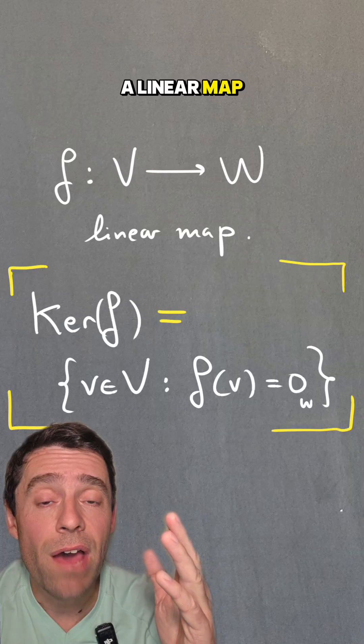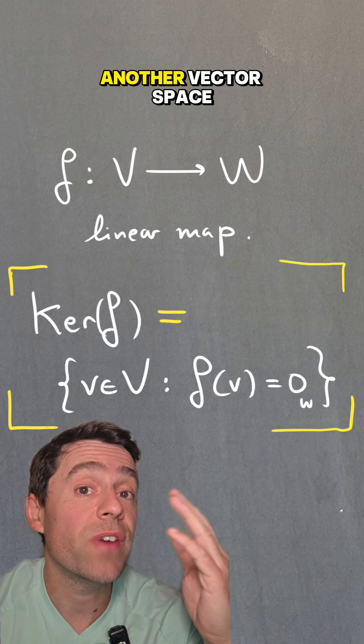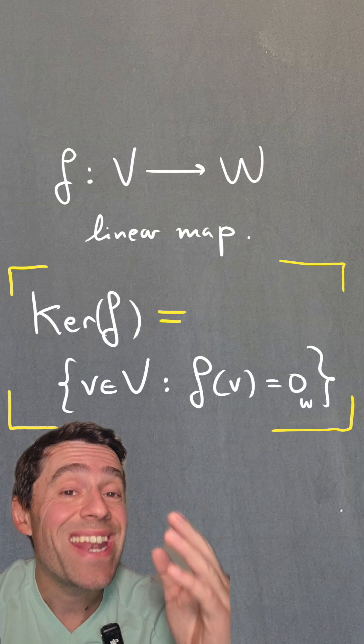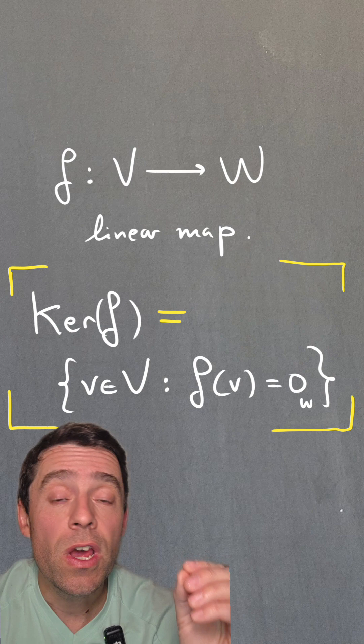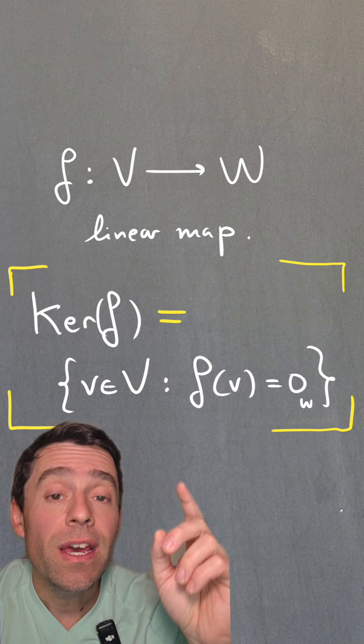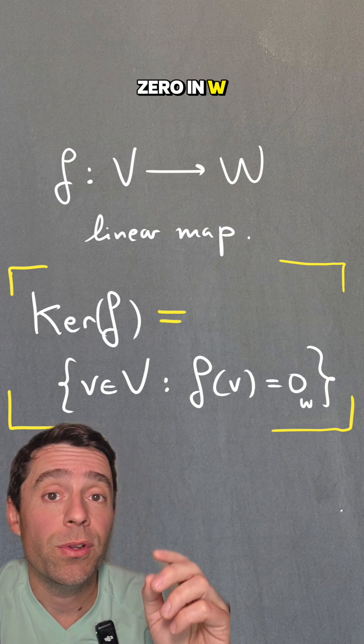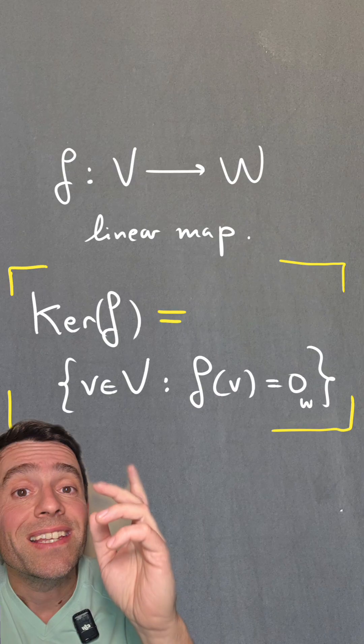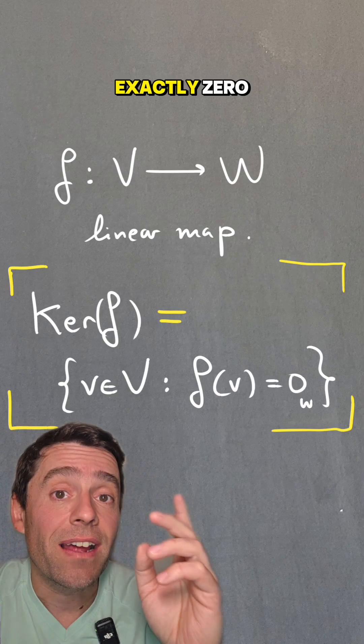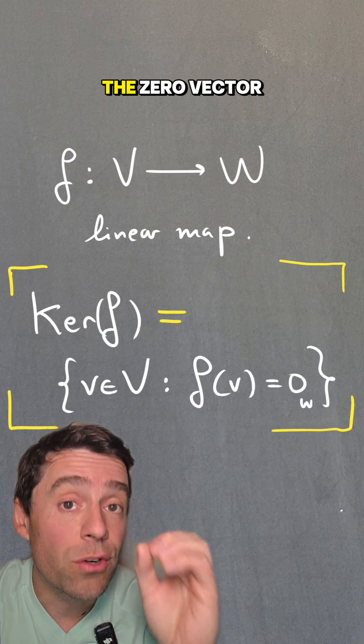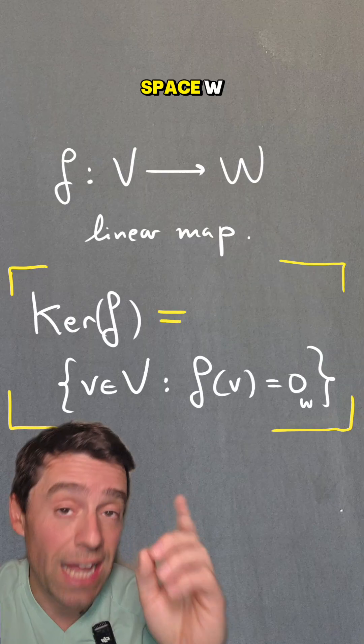If we have a linear map f from a vector space V to another vector space W, then the kernel of that function are those vectors in V that go to zero in W, so those vectors v such that f(v) is exactly zero, where zero is the zero vector in the vector space W.